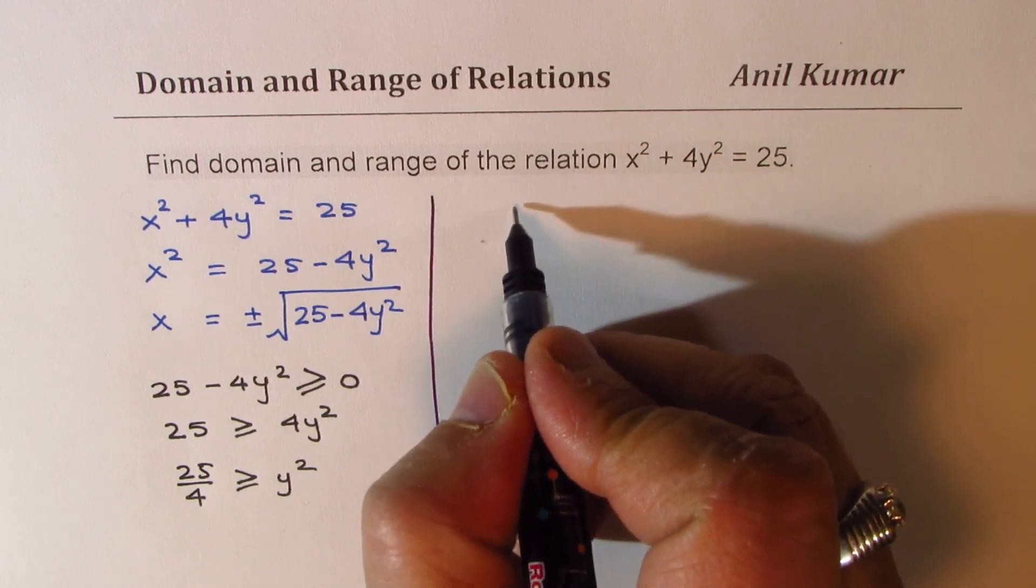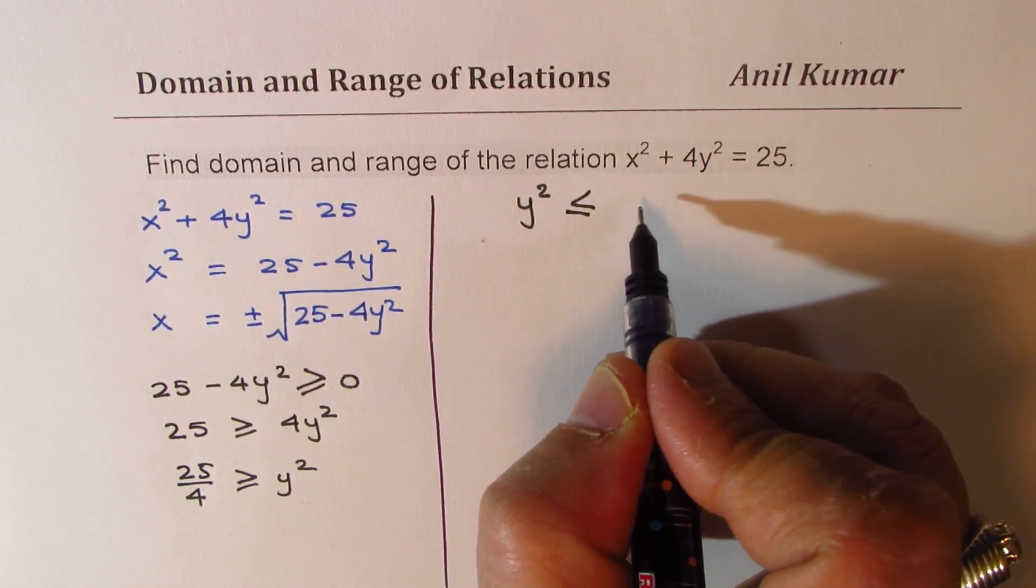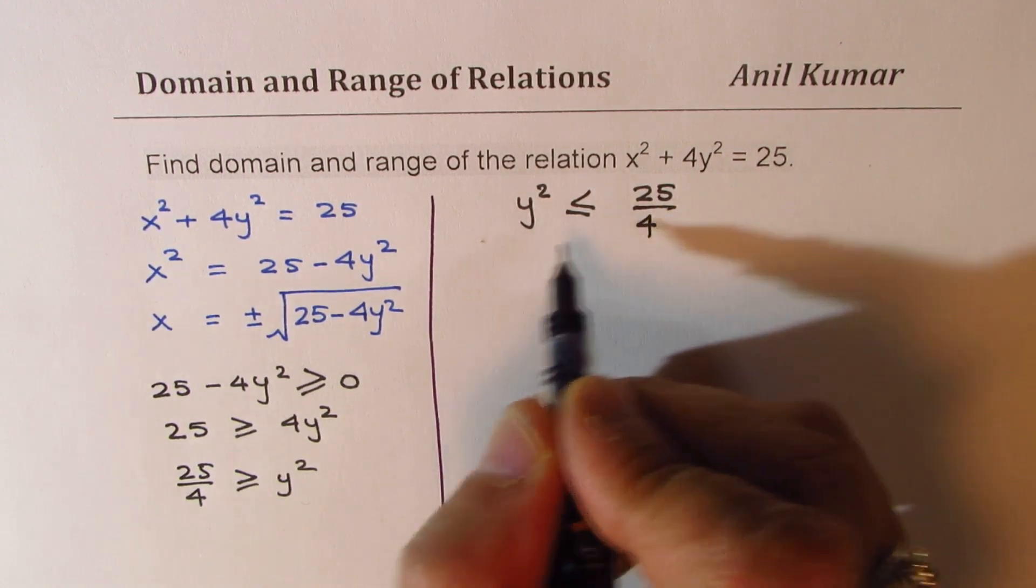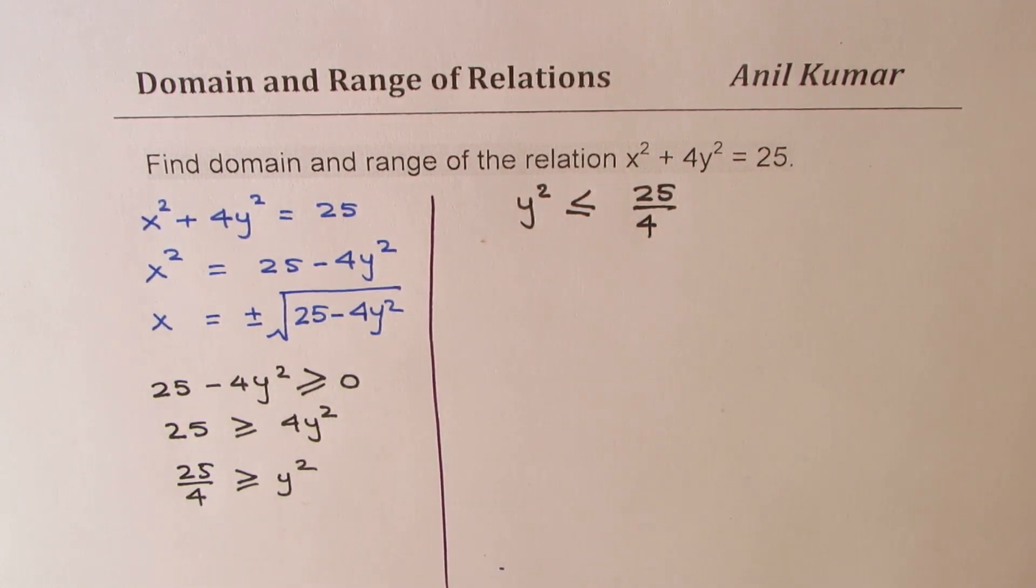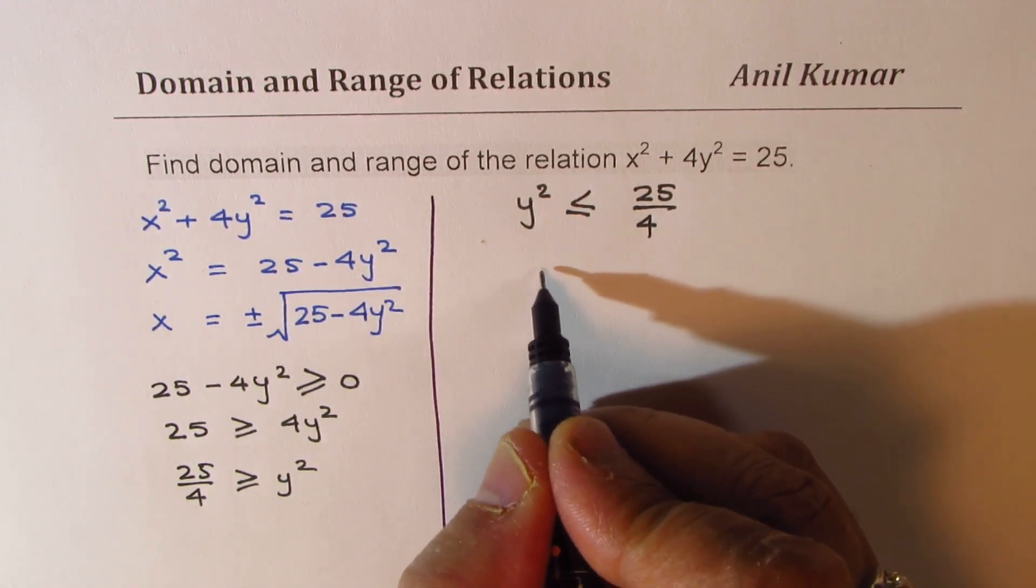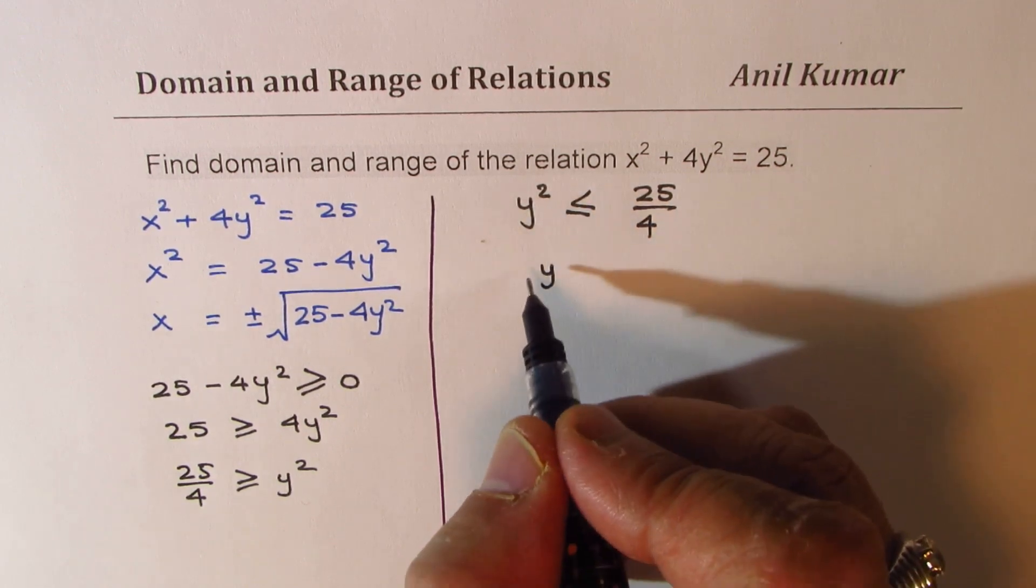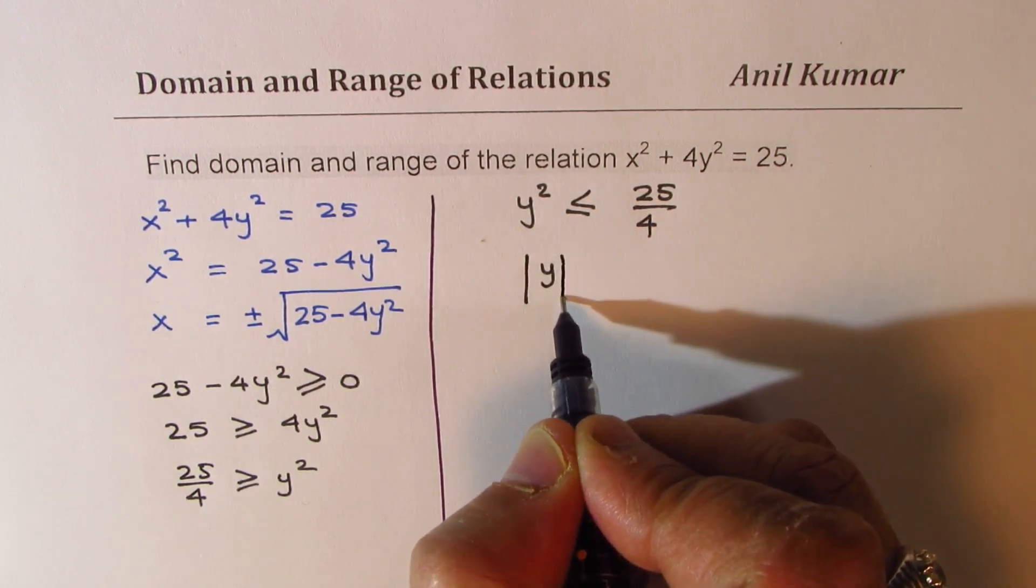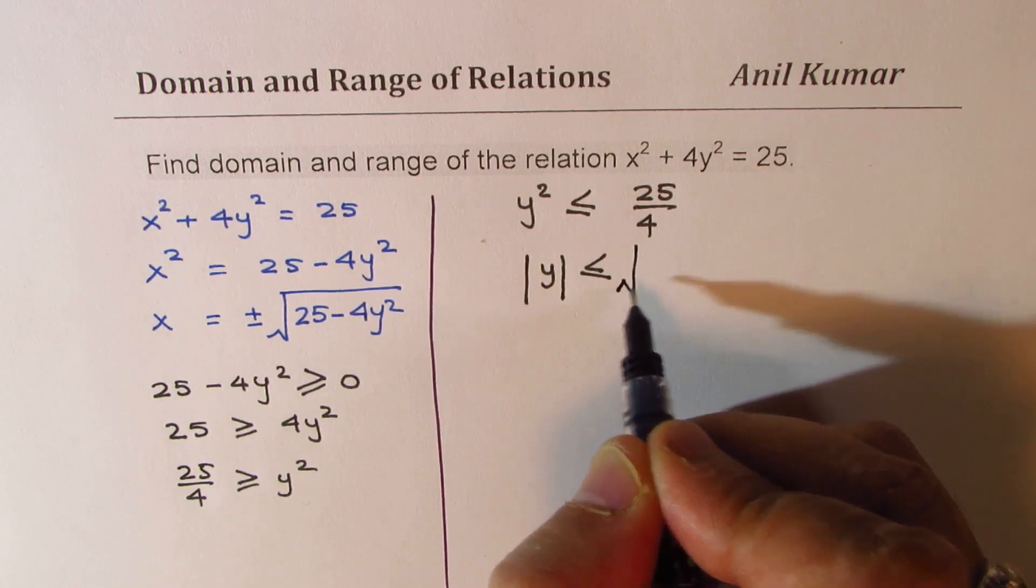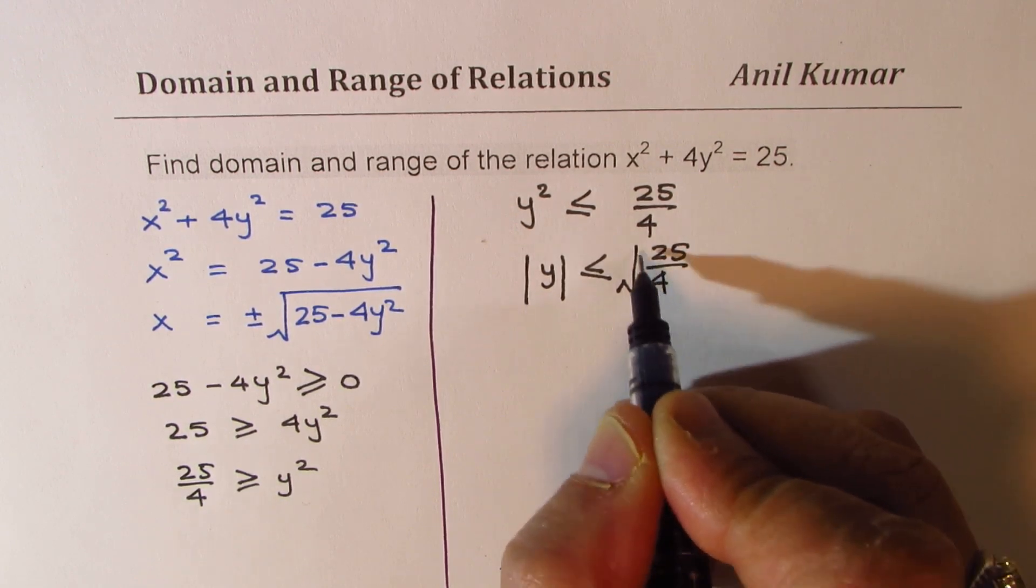So what we are trying to say here is that y² ≤ 25/4, so it is within some interval. When you square root it, what really happens is that we get |y| ≤ √(25/4).